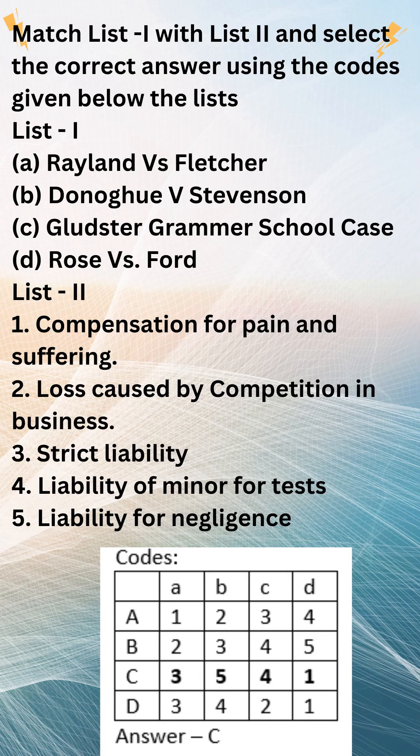Explanation. Rylands v. Fletcher: This case established the principle of strict liability for dangerous substances. This means that a person who brings onto their land a dangerous substance is liable for any damage caused by that substance, even if they were not negligent.